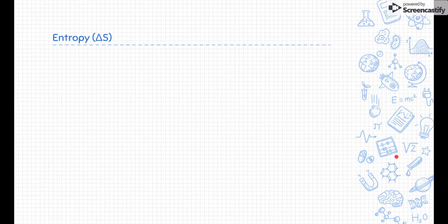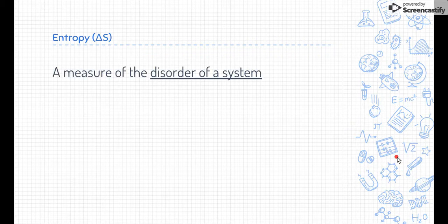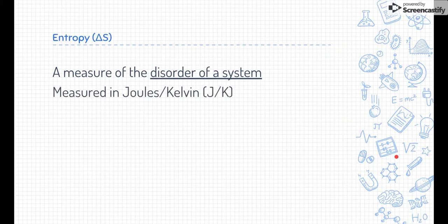So how about entropy? Entropy is a new word, delta S. Delta S is entropy. It stands for a measure of the disorder of the system. So entropy is really just disorder. We measure it in joules per Kelvin.